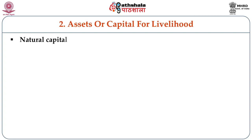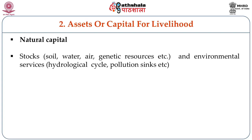Now we discuss assets or capital for livelihood. There are different types of capital. The first is natural capital. For a farmer, this includes soil, water, power sources like electricity, and mechanical equipment like tillers or tractors — these are the stocks. There are also environmental services like the hydrological cycle, the flow and availability of water, and pollution considerations. These constitute natural capital. The second is economic or financial capital — cash, credit, debt, savings, and other economic assets including basic infrastructure.